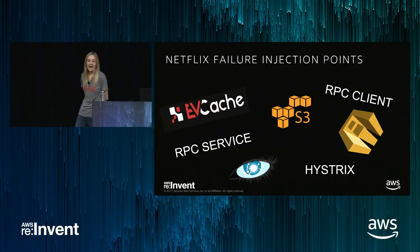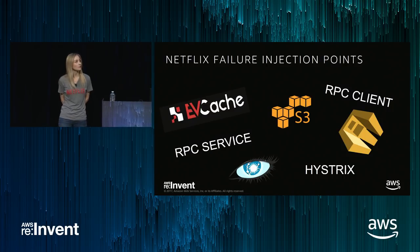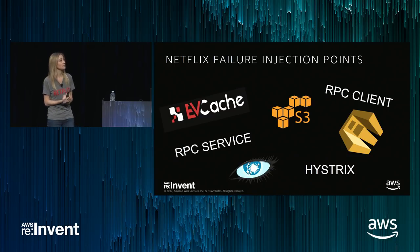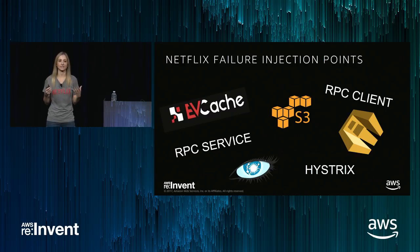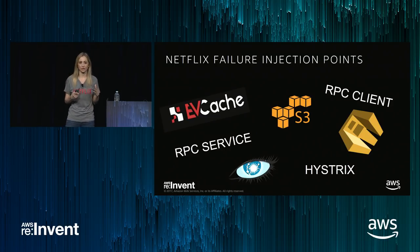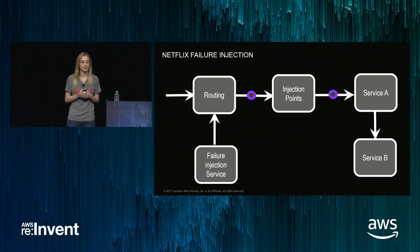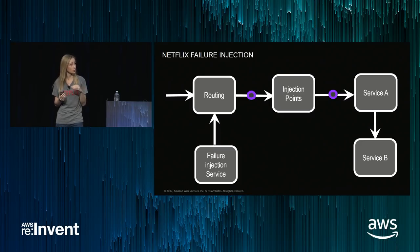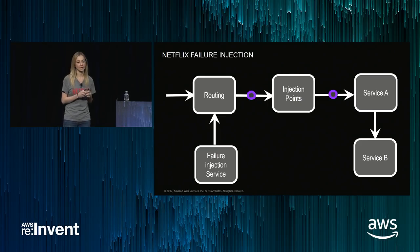Now that we know how failure injection works at a high level, we can talk about how Netflix does it. Netflix has several key building blocks: EVCache, AWS S3, AWS SQS, RPC Clients, RPC Services, Cassandra, and our circuit breaker mechanism Hystrix. We have failure injections at all these different points. The failure injection library checks those injection points and, if one meets the criteria, either fails that call or makes it latent from service A to service B.